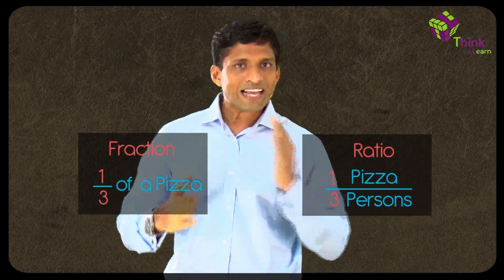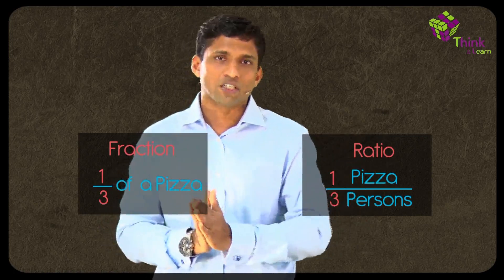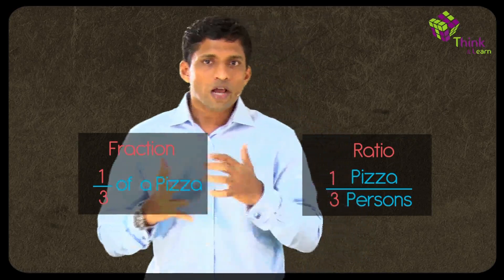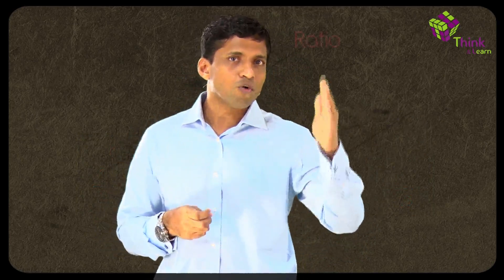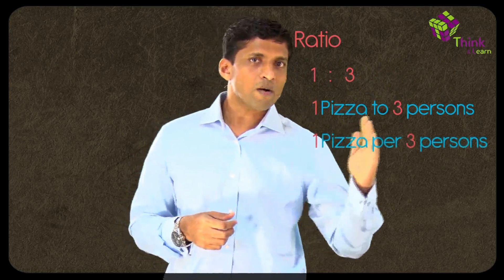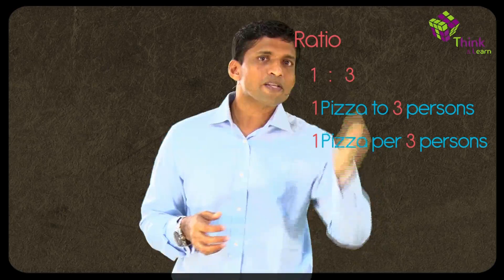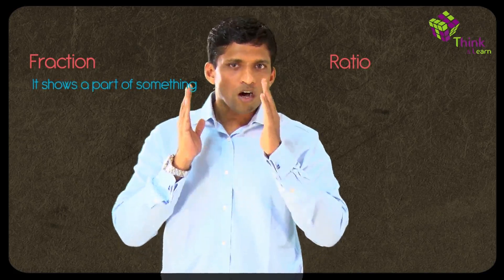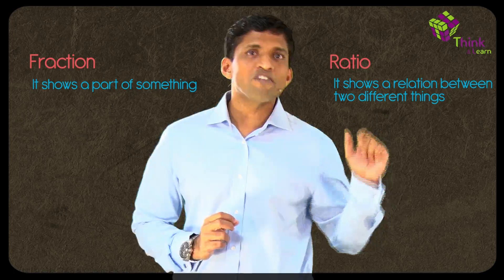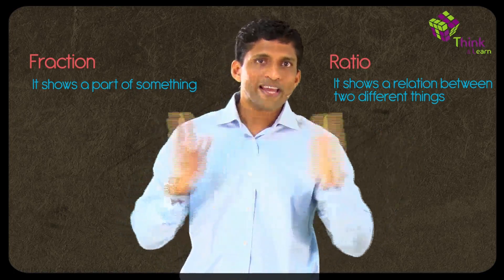That is why ratio is actually a fraction — mathematically, ratio is nothing but a fraction. Since fractions and ratios are used differently, they are sometimes shown differently: 1/3 can be written as 1:3, or 1 pizza to 3 persons, or 1 pizza per 3 persons. To summarize: fraction shows a part of something, ratio shows a relationship or comparison between two different things, but mathematically when you see both, they look exactly the same.